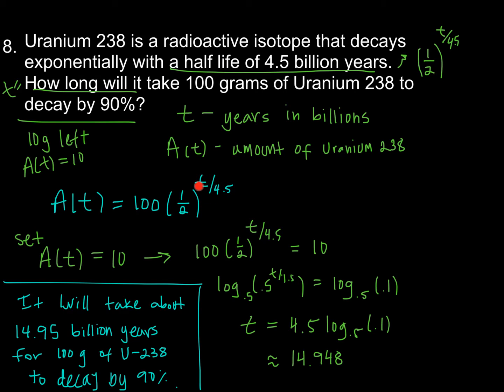So I'm going to set A of t equal to 10. In other words, the amount equal to 10. And I'm going to solve for t. The exact value would be 4.5 times log base 0.5 of 0.1. And that is approximately 14.948. So putting that into words, you've got to be careful. This is billions of years. So I'm going to say it will take about 14.95 or about 15 billion years for 100 grams of uranium to decay by 90%.